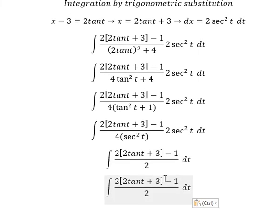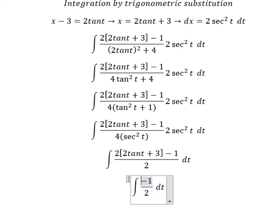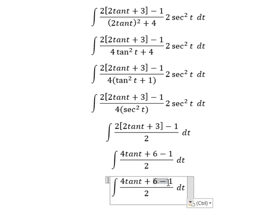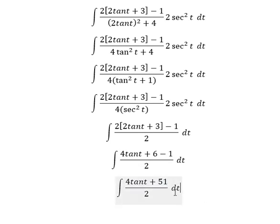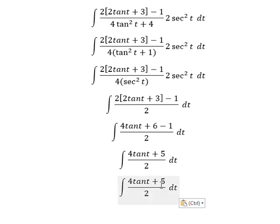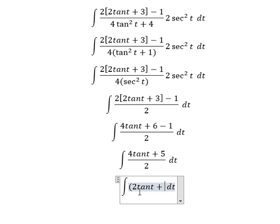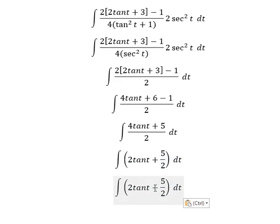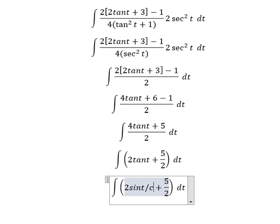So this one we need to expand. Six minus one we have number five. So we have four divided by two, five divided by two, so we have two times tan(t) plus five over two. About tan(t), we have sin(t) over cos(t).